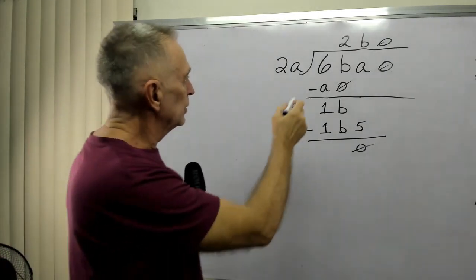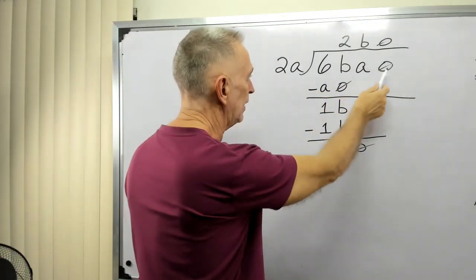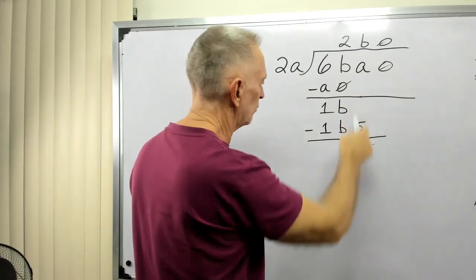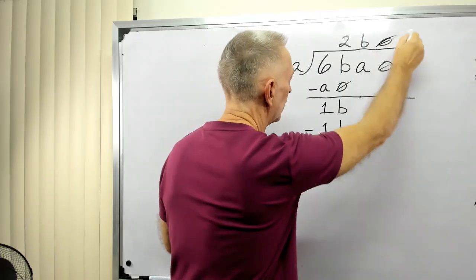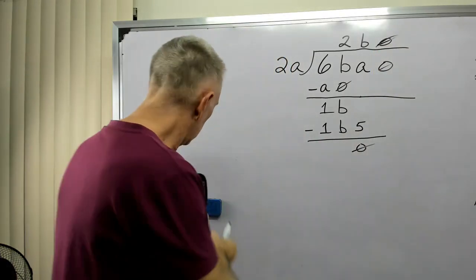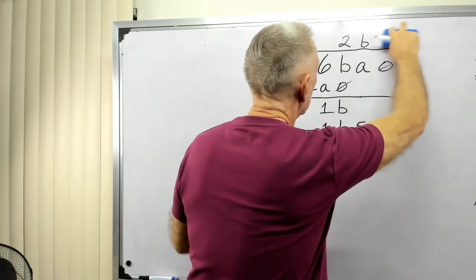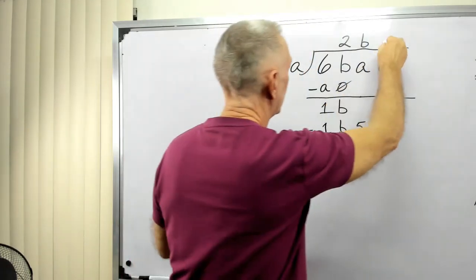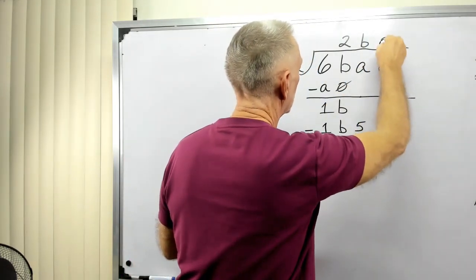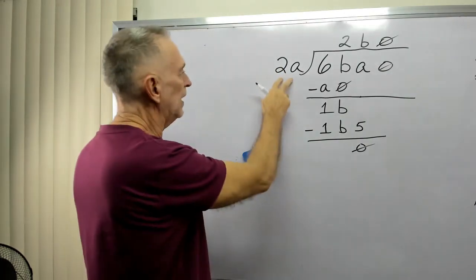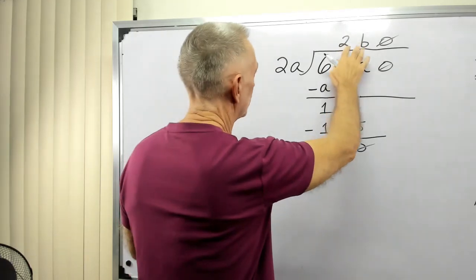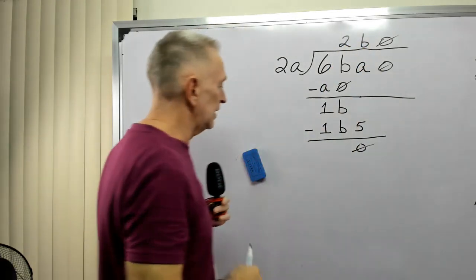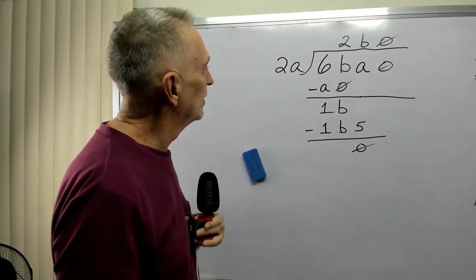Alright, so we have 6BA0. I have a line thrown through all the zeros so you'll know it's not an O since we have letters in here. We have 6BA0 divided by 2A, and the result of that is 2B0.